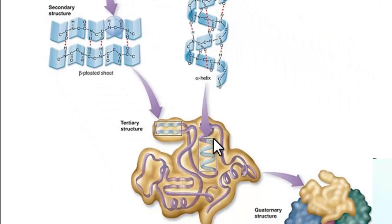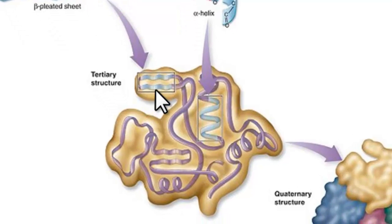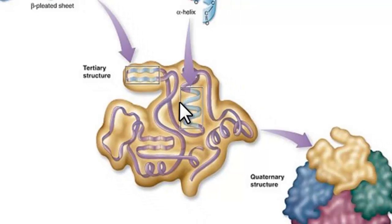Next, we move to the tertiary structure. And this is where we get the complex three-dimensional shape that is quite characteristic of all proteins. We have disulfide bonds occurring between various points that hold it in that shape and also some hydrogen bonds as well. So that's a tertiary structure.